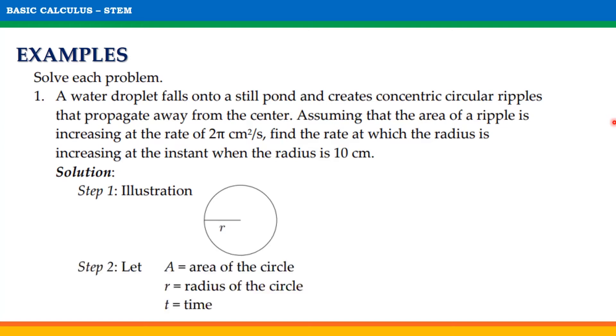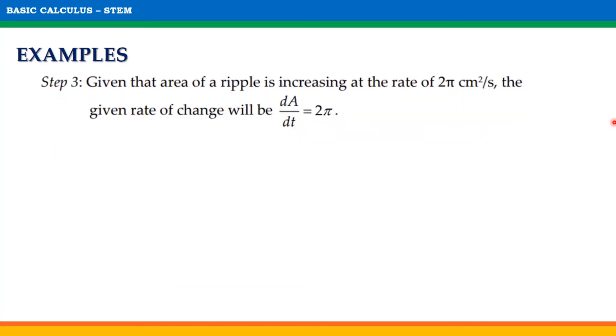For step 2, let A be the area of the circle, r be the radius of the circle, and t be the time. Step 3: Given that the area of a ripple is increasing at the rate of 2π centimeters squared per second, the given rate of change will be dA/dt = 2π. Step 4: Find dr/dt when r = 10.